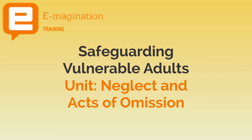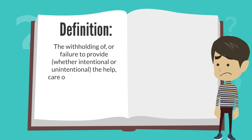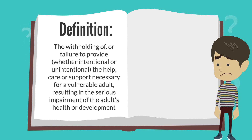We will now look at neglect and acts of omission. The definition is the withholding of, or failure to provide, whether intentional or unintentional, the help, care or support necessary for a vulnerable adult, resulting in the serious impairment of the adult's health or development.